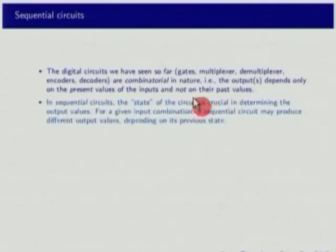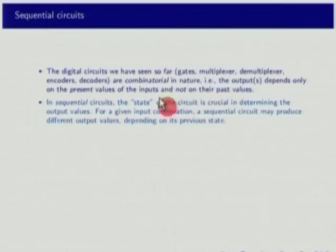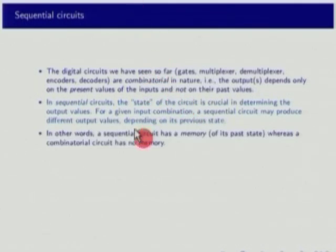In sequential circuits, the state of the circuit is crucial. In a JK flip-flop, for example, its output will depend on what the state was before the clock came. For a given input combination, a sequential circuit may produce different output values depending on its previous state. So sequential circuits have a memory of their past state, whereas the combinatorial circuit has no memory. That is the basic difference between them.